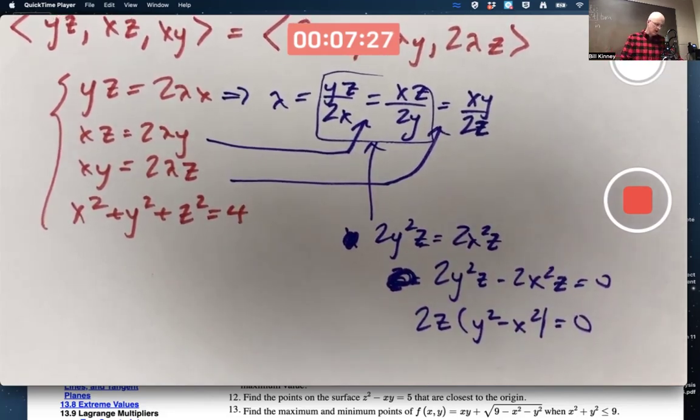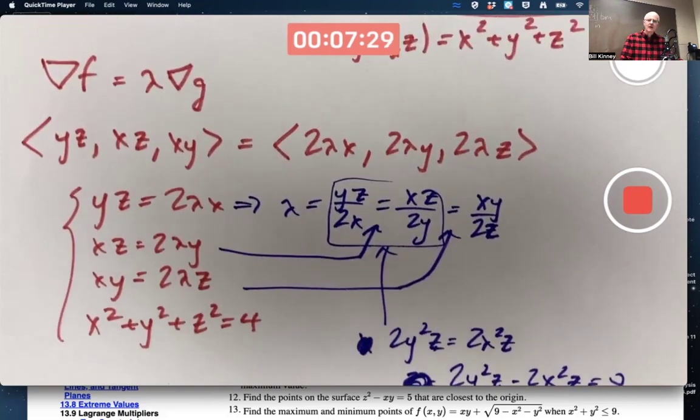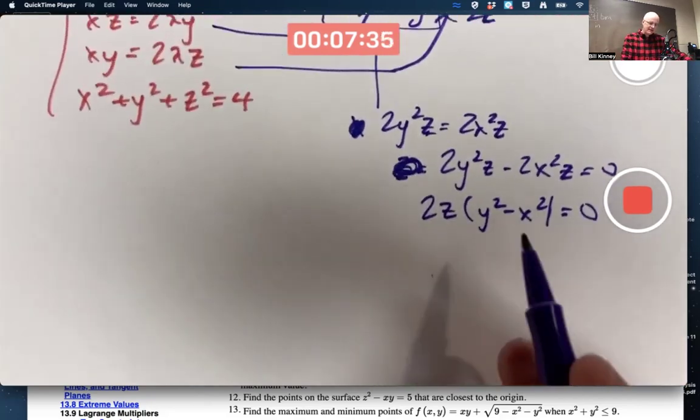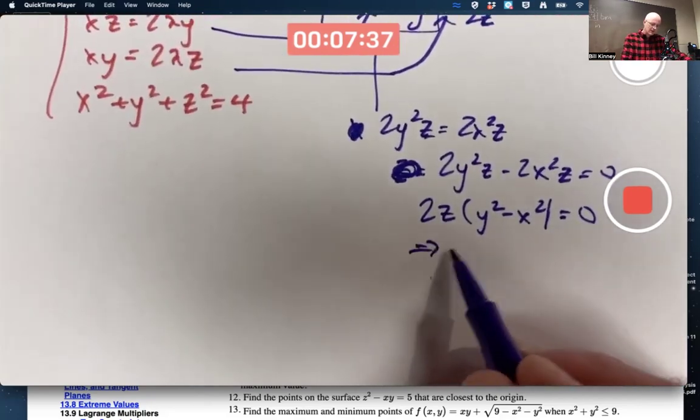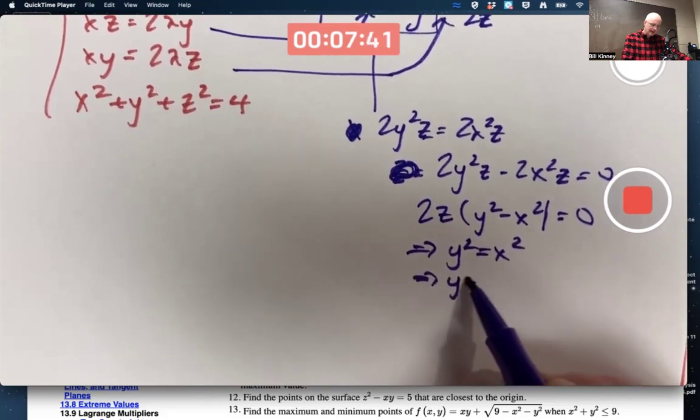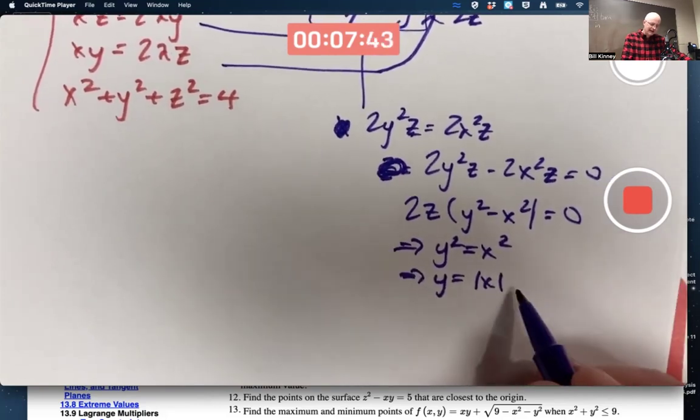None of these things are going to be 0. Which also means you don't have to worry about dividing by 0. So since Z can't be 0, this means Y squared equals X squared. Which is equivalent to Y equaling the absolute value of X, Y is plus or minus X.